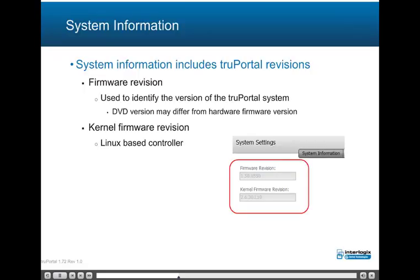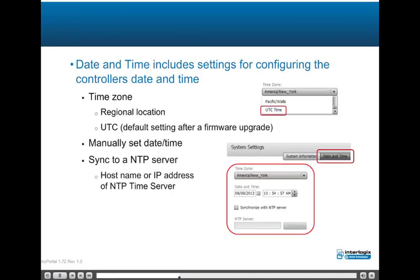System information includes the TruePortal firmware revision, used to identify the version of the TruePortal system; note the DVD version may differ from hardware firmware version. Also shown is the Linux kernel firmware revision. Date and time settings configure the controller's date and time, including selecting the time zone — note UTC is the default setting after a firmware upgrade. The date/time may be set manually, or the system controller may be synchronized to an NTP server by either host name or IP address.